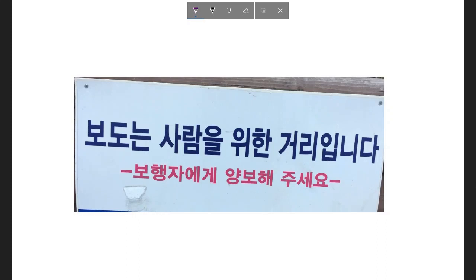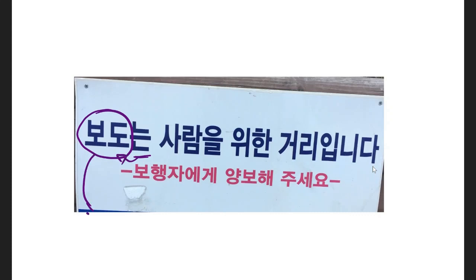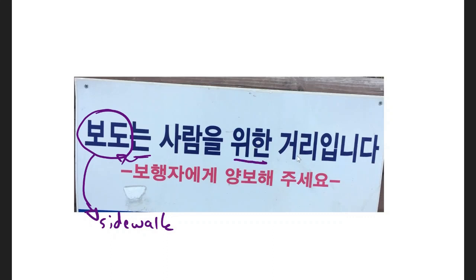Let's take a look at another sign here, and this is a fairly easy sign, but there are still a few cool grammar pieces we can talk about. I'll start off by indicating what the subject of the sentence is. The subject is 보도, and I know that because 는 is attached to this noun. The noun 보도 translates to sidewalk. Before I get into what the rest of this is saying, I want to talk about what 위한 would translate to.